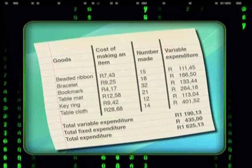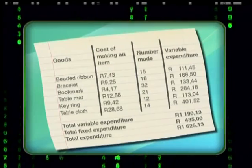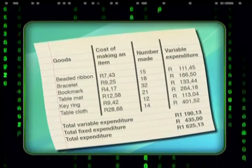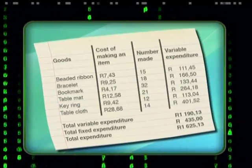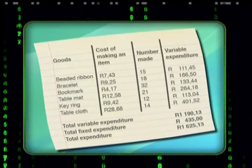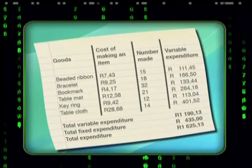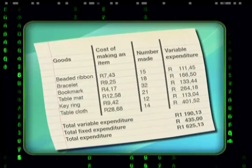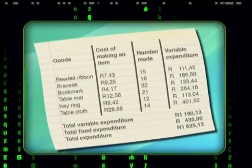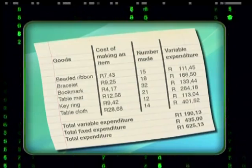I added these costs together to get the value of Ma Di's total variable expenditure for the week. Next, I added in her fixed expenditure, which includes her rental and transport costs. I got a total of 1,625 rand and 13 cents.